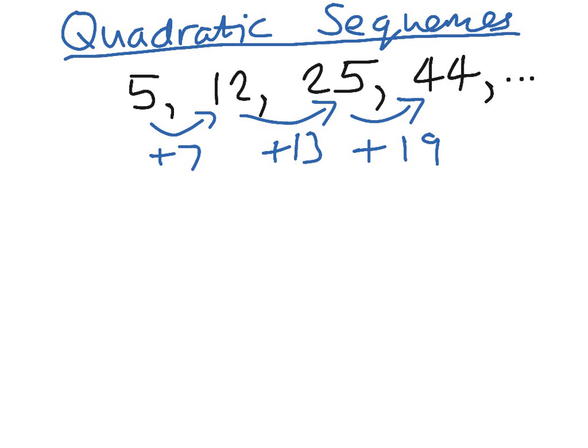For a quadratic sequence the first differences will be different, so we need to look at the second difference. From 7 to 13 we are adding 6, and from 13 to 19 we are also adding 6.